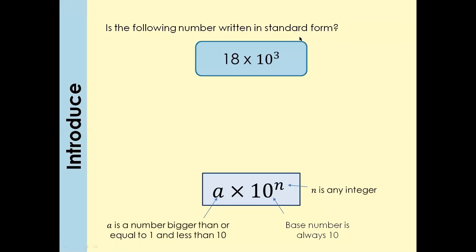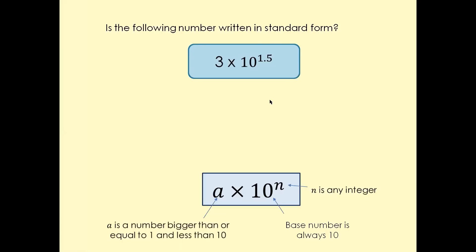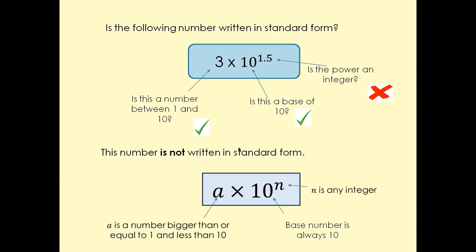Is 18 × 10³ written in standard form? Is 18 between 1 and 10? No. So this number is not written in standard form. And is 3 × 10^1.5 in standard form? The number 3 is between 1 and 10 — tick. The base is 10 — tick. But the power 1.5 is not an integer; it's a decimal. So it doesn't follow that criteria, meaning this number is not in standard form.